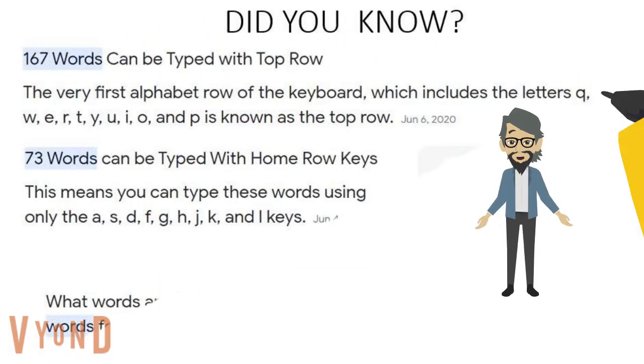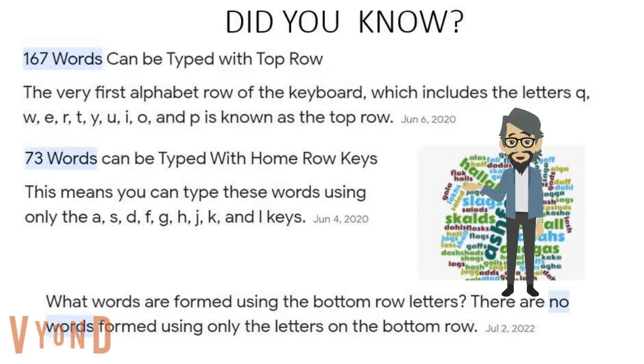Here's some trivia about the keyboard. Did you know that you can use the top row of your keyboard to type 167 words just with the top row? 73 words can be used with just letters on the home row. And here's something that really surprised me. The letters on the bottom row? There are no words you can type with the bottom row. Do you know why?